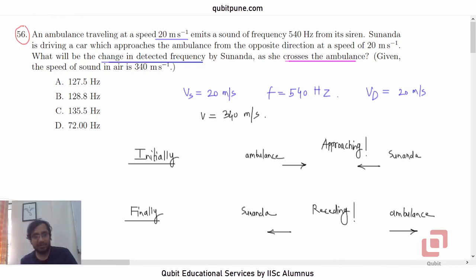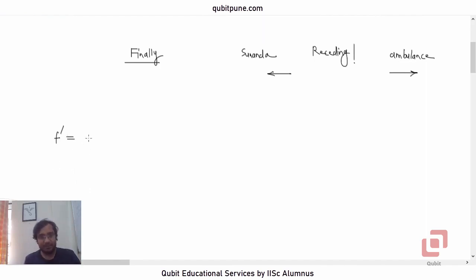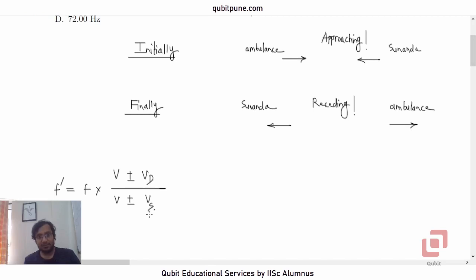Let us now recall the Doppler effect formula. The frequency detected, f-prime, is given by: f-prime = f × (v ± vD) / (v ± vS), where vD is the detector speed, vS is the source speed, v is the velocity of sound, and f is the original frequency.